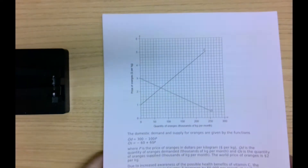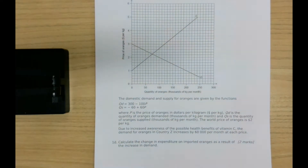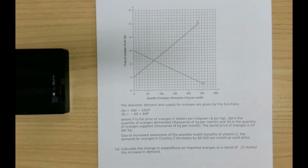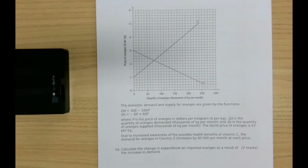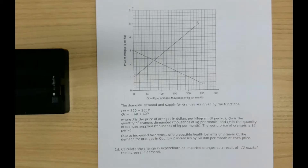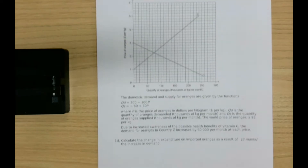Question 1D: the domestic demand and supply for oranges are given by functions QD and QS, where P is the price of oranges in dollars per kilogram, QD is quantity demanded in thousands of kilograms per month, and QS is quantity supplied in thousands of kilograms per month. The world price of oranges is $2 per kilogram. Due to increased awareness of vitamin C health benefits, demand increases by 60,000 units per month at each price.